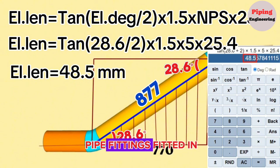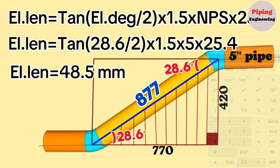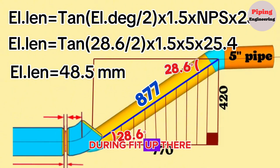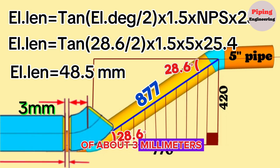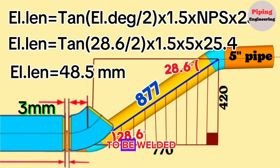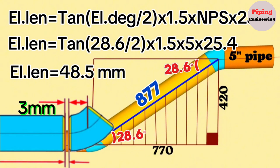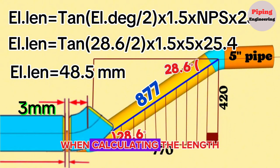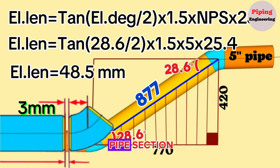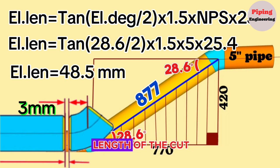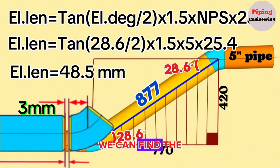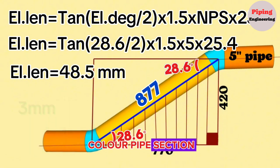Now look at the pipe fittings fitted in the pipeline. During fit-up there should be a gap of about 3 mm between the pipe fittings to be welded. This gap is for better root welding. We should take these gaps into account when calculating the length of the yellow color pipe section. If we subtract the lengths of the cut elbows and the gaps for welding from the total length, we can find the length of the yellow color pipe section.